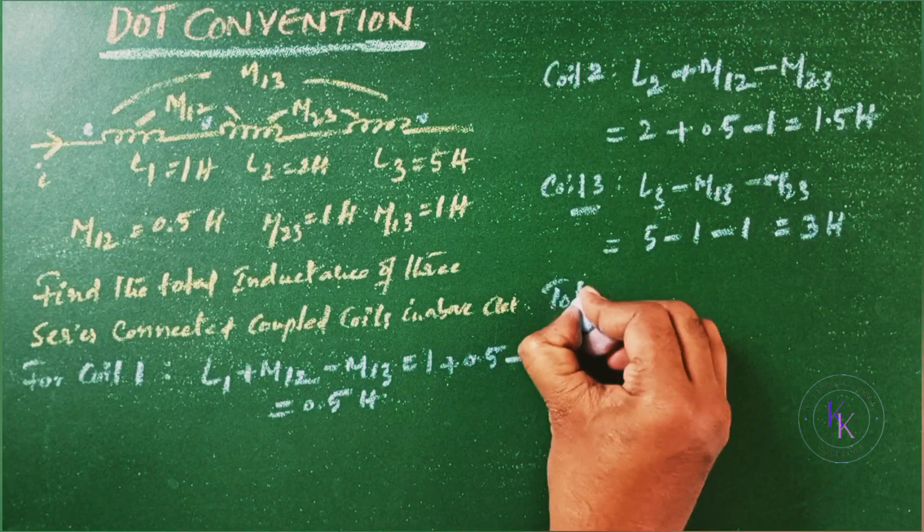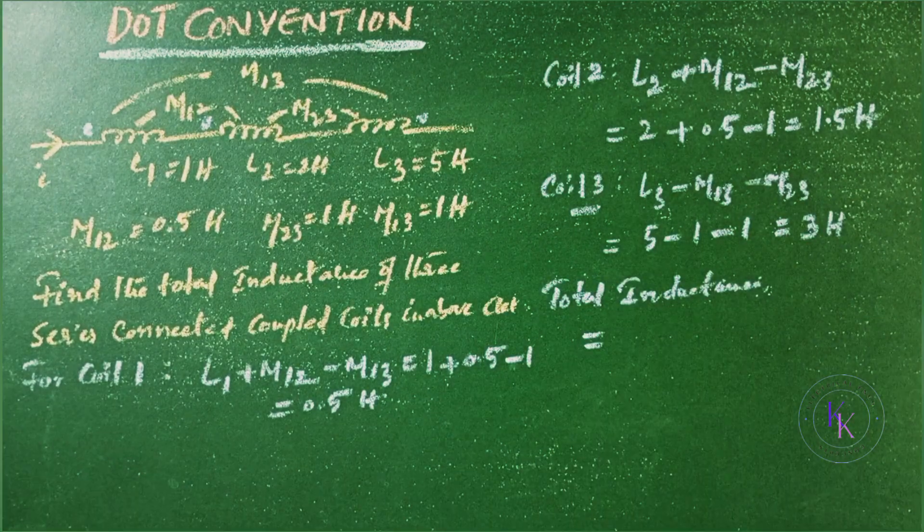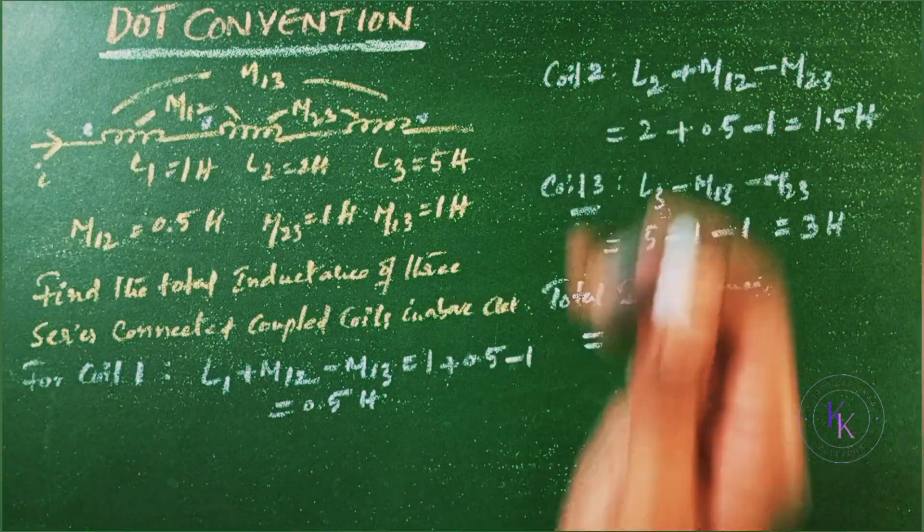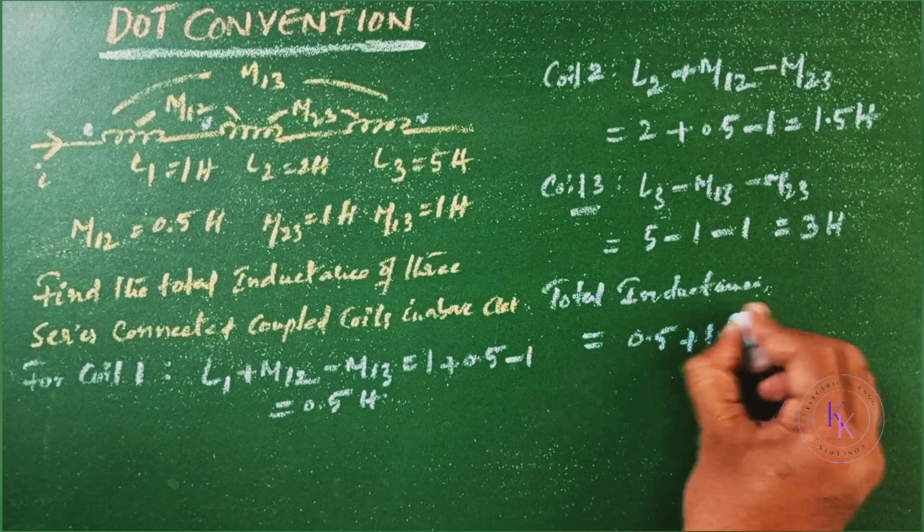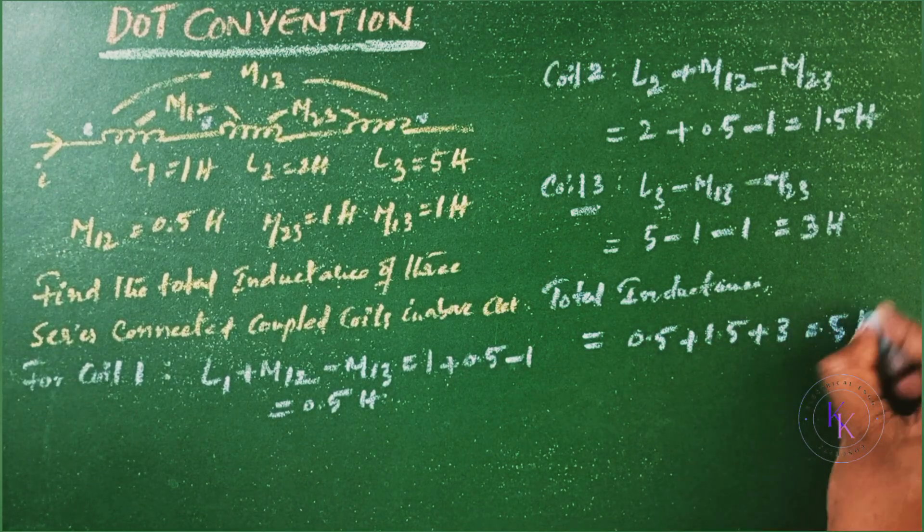Now total inductance is given by the individual inductances of each coil. Now you can add 0.5 plus 1.5 plus 3 that equals to 5 Henrys.